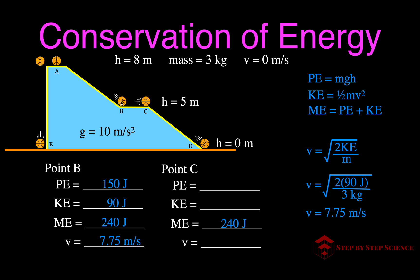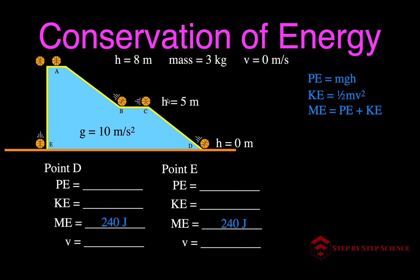At point C it's the same as at point B, because there's no friction to slow the ball down. The ball is at the same height of 5 meters, so it has the same potential energy of 150 joules, the same kinetic energy of 90 joules, and the same velocity of 7.75 meters per second. Moving from B to C, the ball isn't slowing down, losing potential, or changing kinetic — all values remain the same.